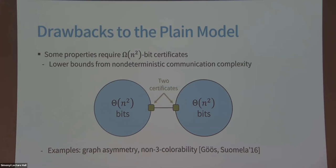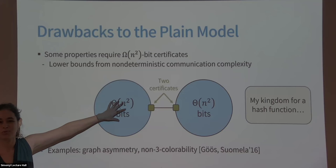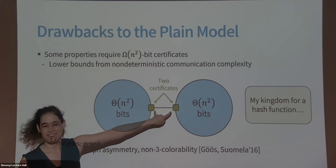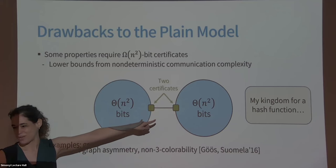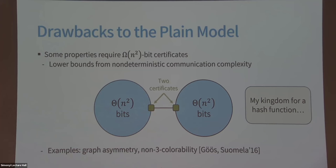While working on these lower bounds, we noticed that if only we had a good hash function, many of these lower bounds would disappear. If we could hash down the input on each side of the bottleneck, then maybe short certificates would be enough — the hash would provide the connection. But a hash function is a computational object, so in order to ask this question, we needed to move to a model that is not purely information-theoretic, where we also have computational considerations. That's what we did here.